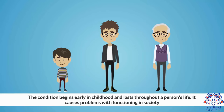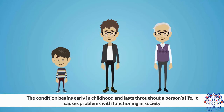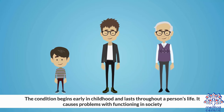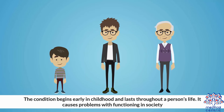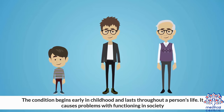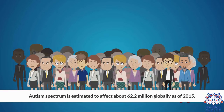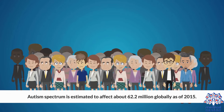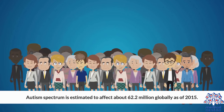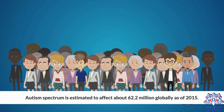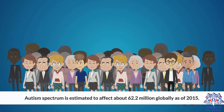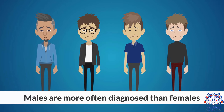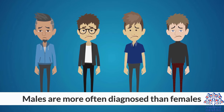The condition begins early in childhood and lasts throughout a person's life, causing problems with functioning in society. Autism spectrum disorder is estimated to affect about 62.2 million people globally as of 2015. Males are more often diagnosed than females.